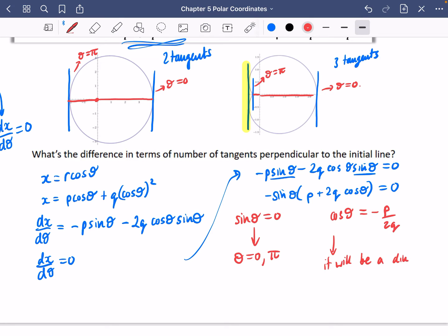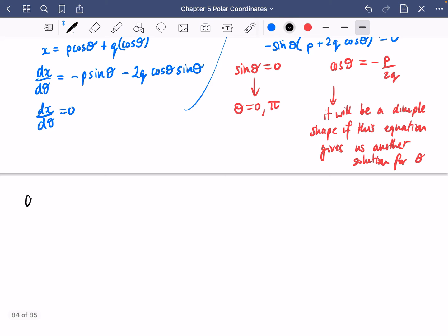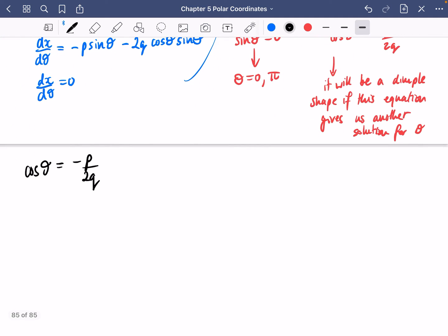So it will be a dimple. It will be a dimple shape if this equation gives us another solution for θ. So let's investigate that.